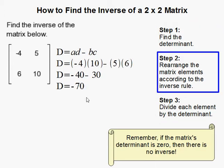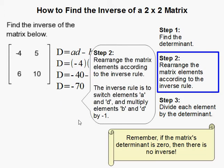Now, what we have to do is rearrange the matrix elements or the individual parts of the matrix according to the inverse rule. So the inverse rule is simply to switch these two elements, switch A and D, and then just multiply B and C by negative 1.